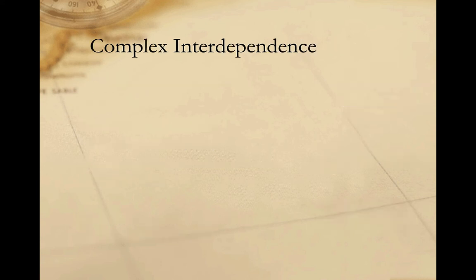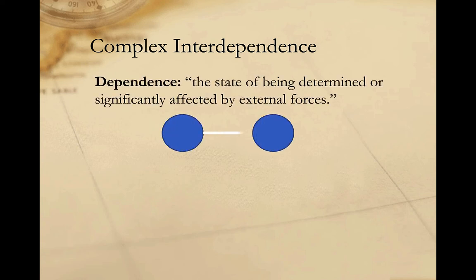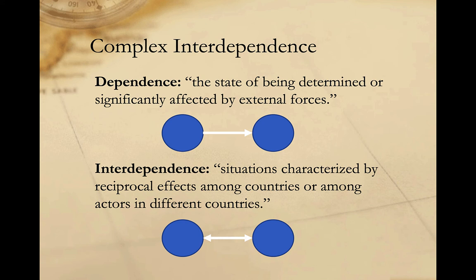The idea of complex interdependence is also central to the neoliberal understanding of global politics. Developed in its current form by Robert Keohane and Joseph Nye, the idea of complex interdependence was articulated as part of their effort to make sense of the high degree of cooperation between states in the context of an anarchic international environment. Keohane and Nye contrast dependence — which they see as the state of being determined or significantly affected by external forces — with interdependence, which they define as situations characterized by reciprocal effects among countries or among actors in different countries. In essence, while asymmetries of power may exist, each actor is able to influence the other.